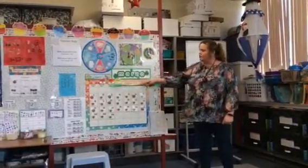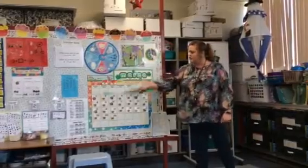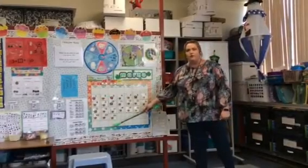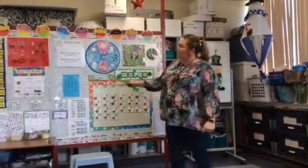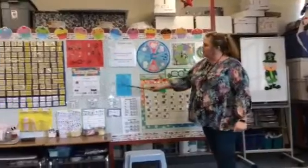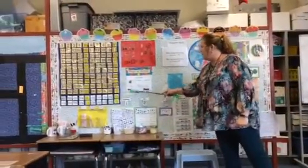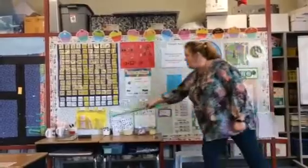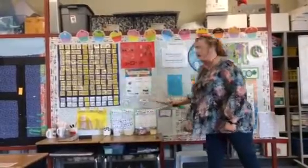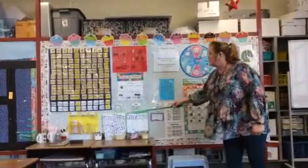Today is Tuesday, March 24th, 2020. Let's jump on over to the calendar. Look what I've done — I've added your pennies, tally marks, counters, and straws. How many days have we been in school now? 123.